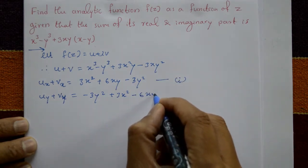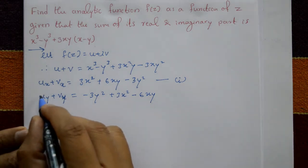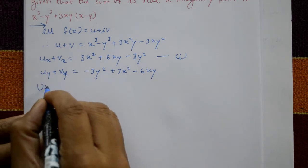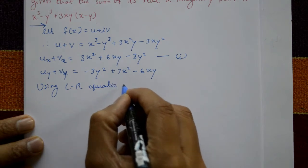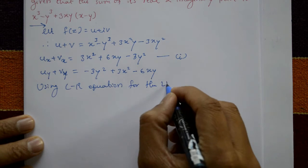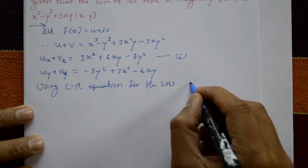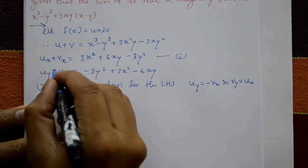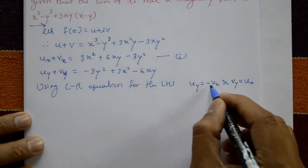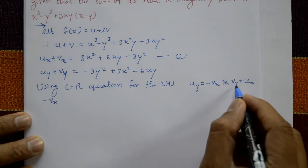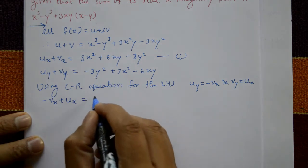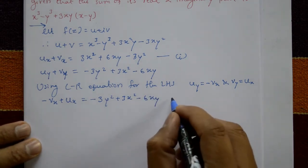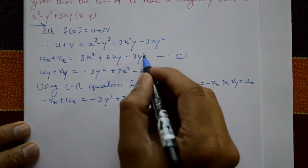Now change ∂u/∂y and ∂v/∂y on the left-hand side using the Cauchy-Riemann equations. By CR equations: ∂u/∂y = -∂v/∂x and ∂v/∂y = ∂u/∂x. Substituting, the left-hand side becomes -vx + ux, and the right-hand side remains 3y² + 3x² - 6xy. This is equation number two.